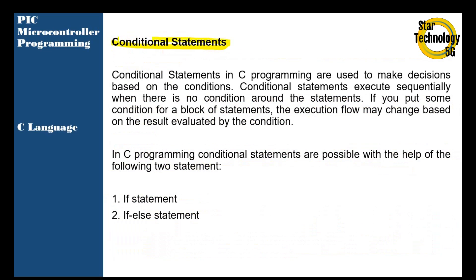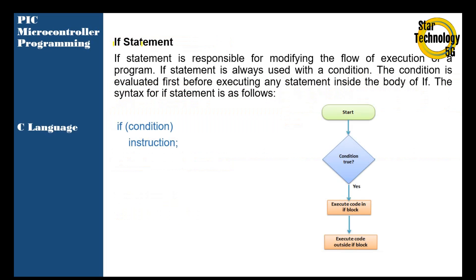Conditional statements in C programming are used to make decisions based on conditions. Statements execute sequentially where there is no condition. If you put a condition around a block of statements, the execution flow may change based on the result evaluated by the condition. In C programming, conditional statements are possible with the help of the if statement and the if-else statement.